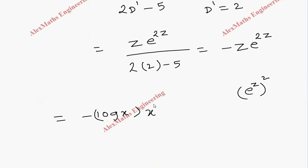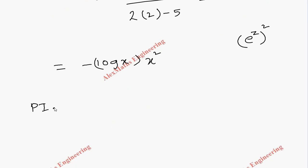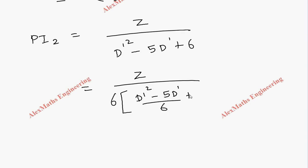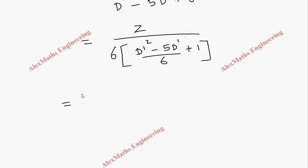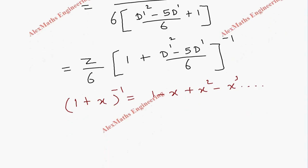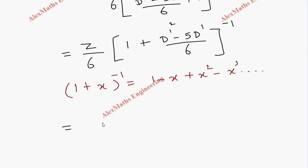Now for particular integral 2, the term is z divided by D'² − 5D' + 6. We take 6 common from the denominator to get z/6 times 1 over (1 + (D'² − 5D')/6). Bringing the denominator to the numerator gives (1 + (D'² − 5D')/6)^(−1). Using the expansion (1+x)^(−1) = 1 − x + x² − ..., since z is differentiable only once, we ignore higher powers.